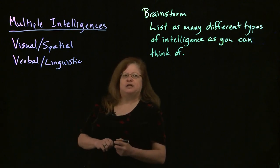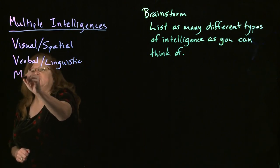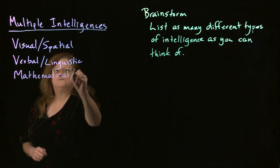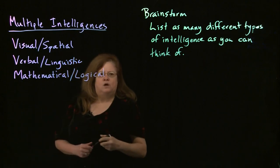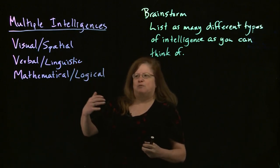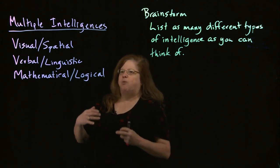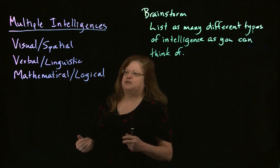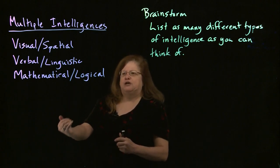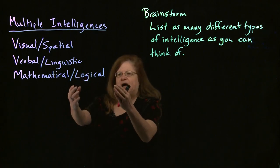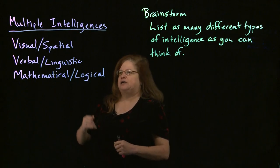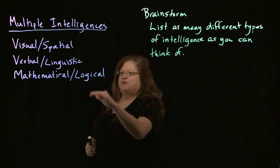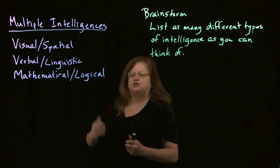Another of the more traditional intelligences is the mathematical or logical. If you have this strength, you probably like to analyze things, boil them down to formulas where you can fill in the variables and get your answer. You may have good logical reasoning skills where you can follow point from point in things like solving a proof in geometry. So the mathematical is one of the more standard types of intelligence we look at.